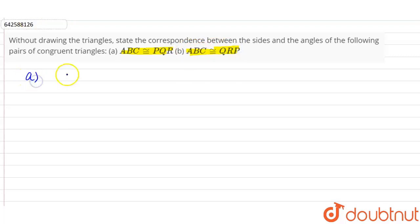If we talk about part A, ABC is congruent to PQR. So if we talk about angles, we can say angle A is congruent, or we have to tell the pairs. So we can say that angle A is equal to angle P, angle B is equal to angle Q, and angle C is equal to angle R. If we talk about sides,